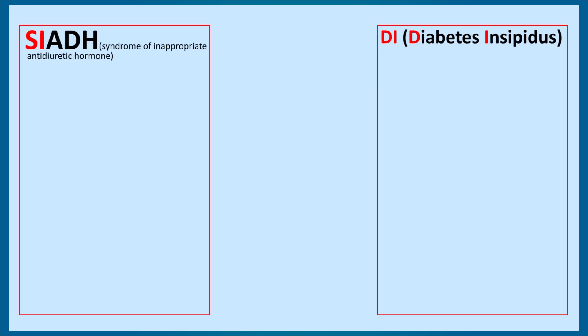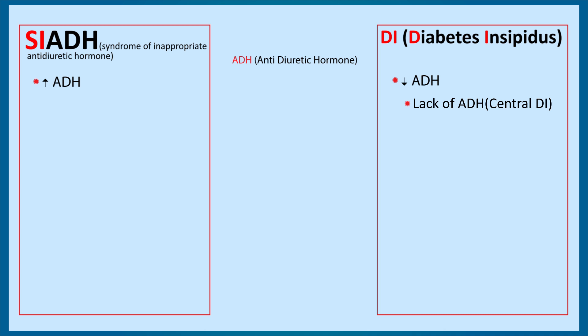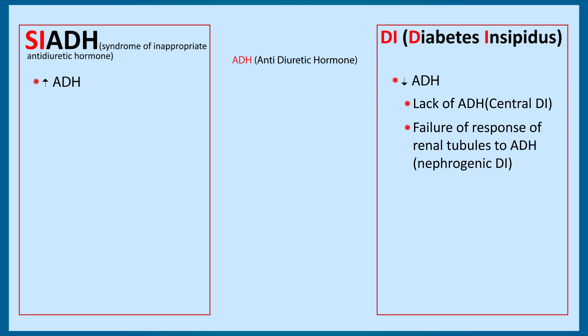SIADH and diabetes insipidus both have to do with a hormone called ADH, that is anti-diuretic hormone. In SIADH there is increased anti-diuretic hormone, while in diabetes insipidus there is decreased anti-diuretic hormone. It can be either due to lack of ADH — that is central diabetes insipidus — or due to failure of response of the renal tubules to ADH, that is nephrogenic diabetes insipidus. In nephrogenic diabetes insipidus there is a normal level of ADH but the kidney tubules are unresponsive to it.